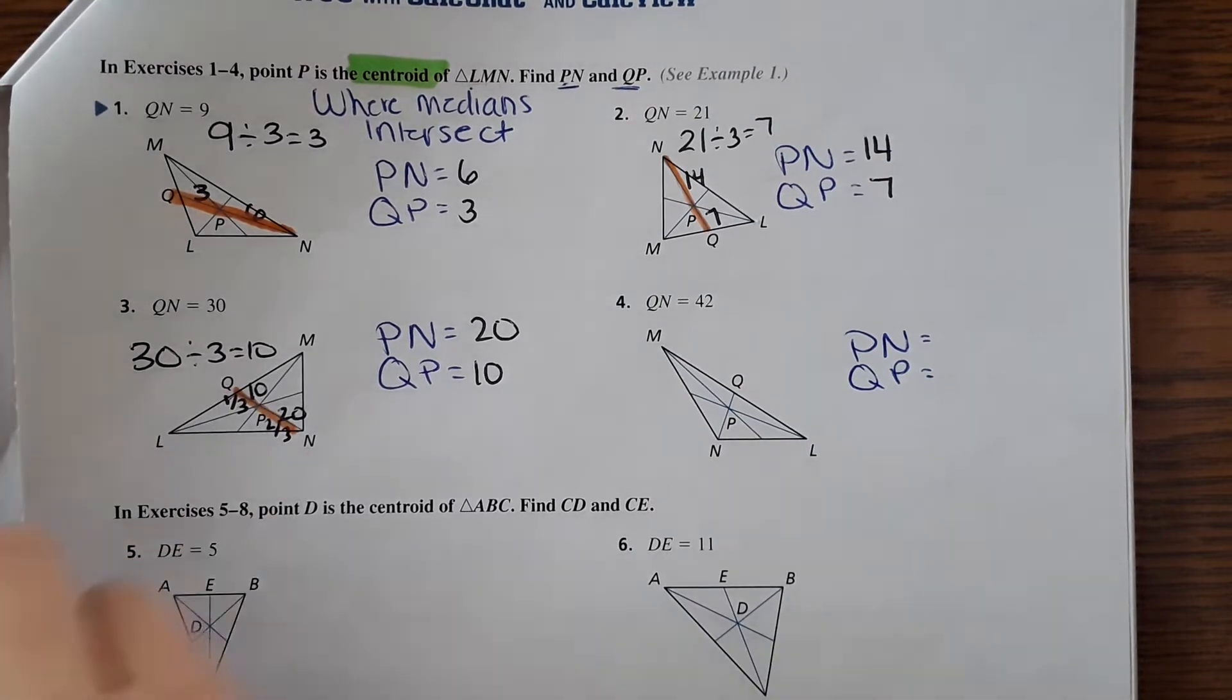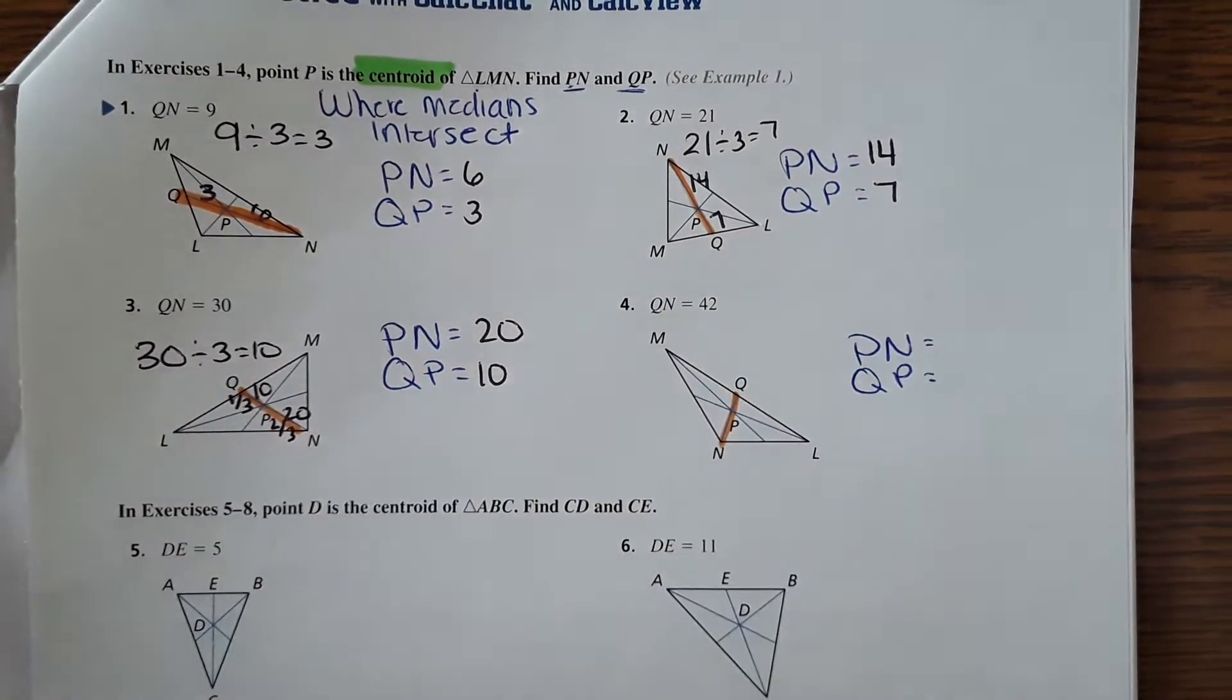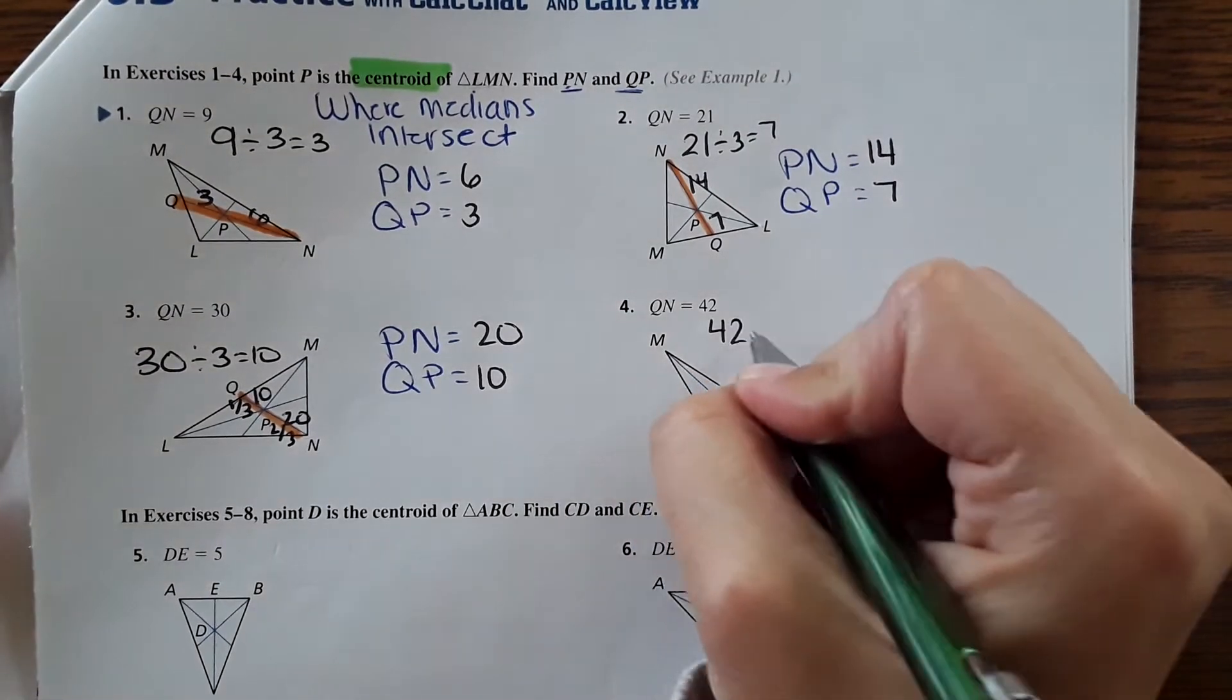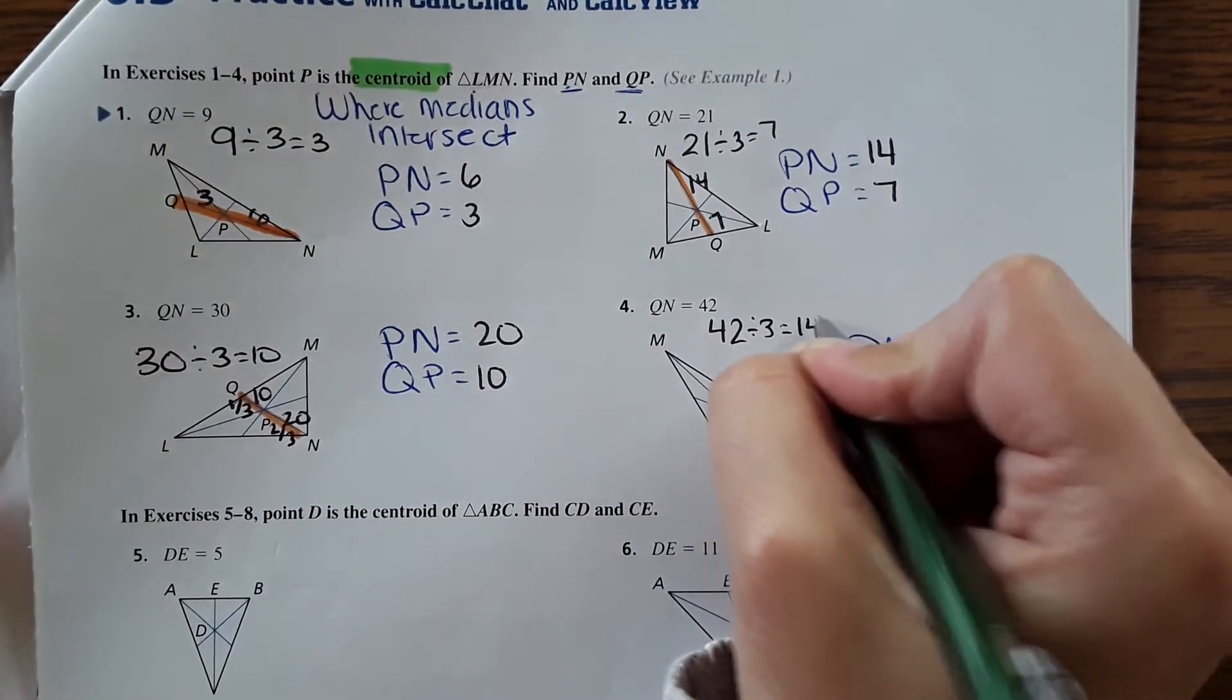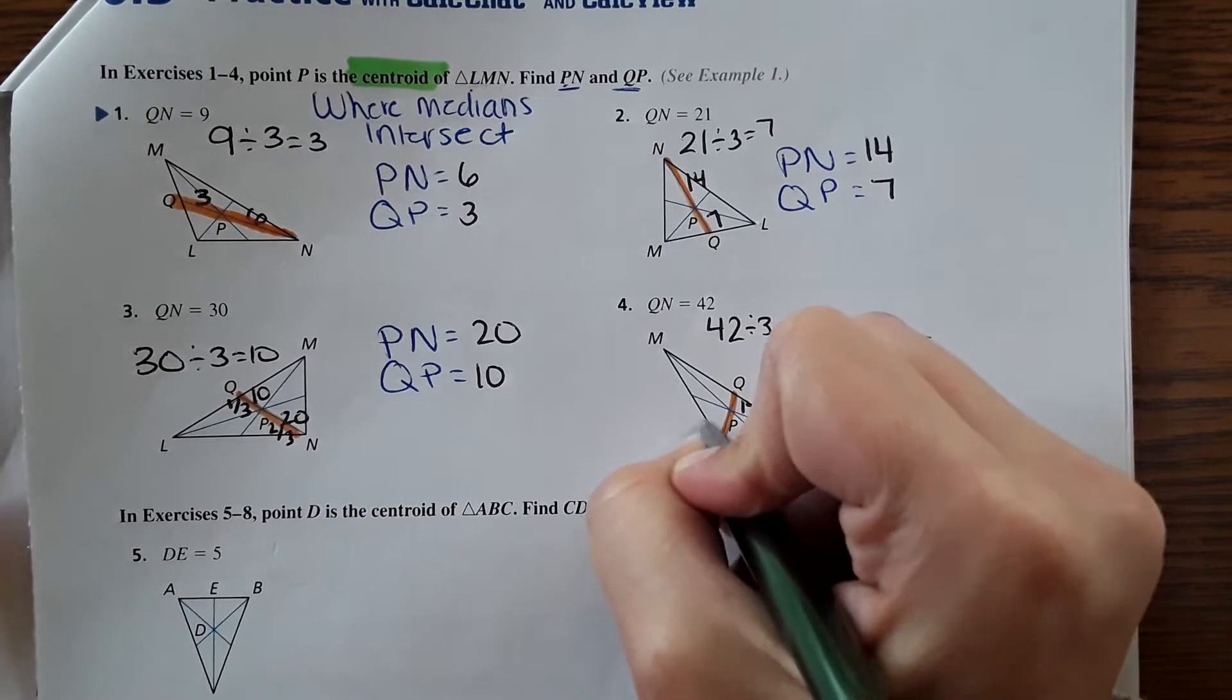Okay, and then QN right here is 42. 42 divided by 3 is 14. So it's 14 and 28.